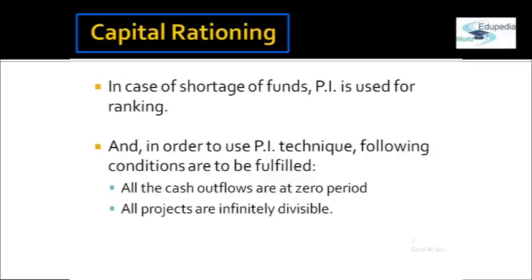However, there are certain preconditions for going for capital rationing. First, the funds available for investment today are in shortage — you do not have unlimited funds. Second, there are more than one financially viable projects available for consideration by the company, so that a project mix could be prepared. Third, all the projects are not mutually exclusive — it's not like you can go for only one — and they could be divided, so they could be accepted in part also.